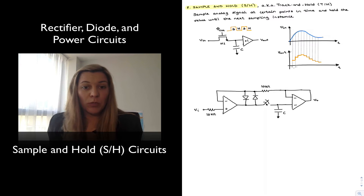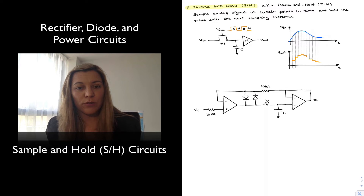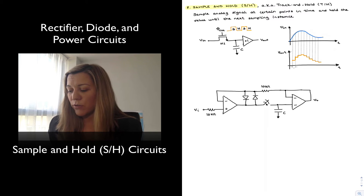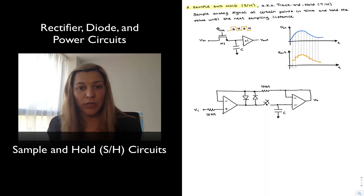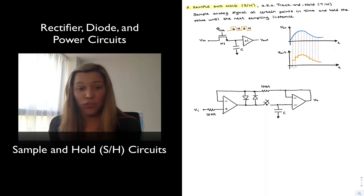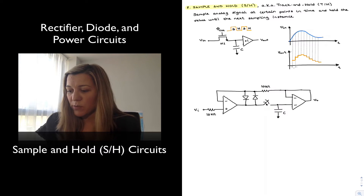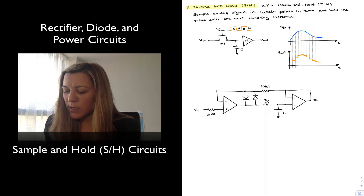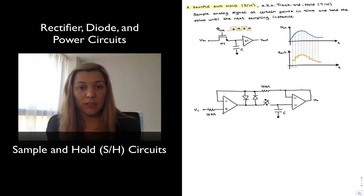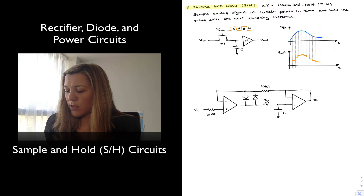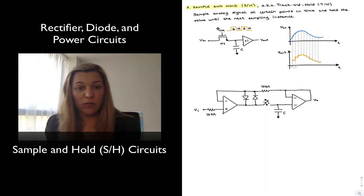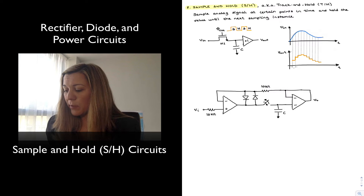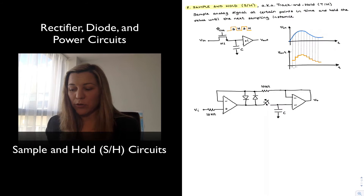There are multiple possible implementations for such a circuit, but one of the common ones would be the one I have drawn here, which consists of an input buffer, a switch — which in this case I've represented as a switch, but it could be a MOSFET transistor, for example. There is a clock signal that allows the switch to open and close. And then there is a capacitor, which is our storage element — the holding element — and it's connected to an output buffer.